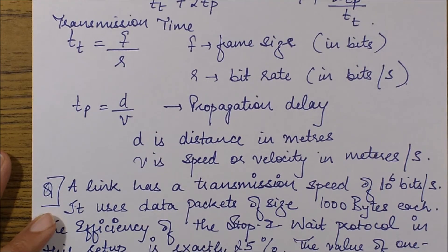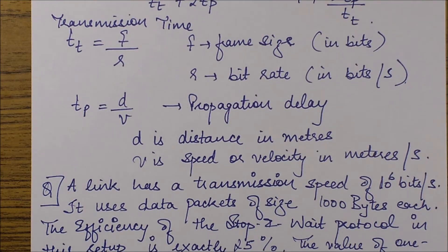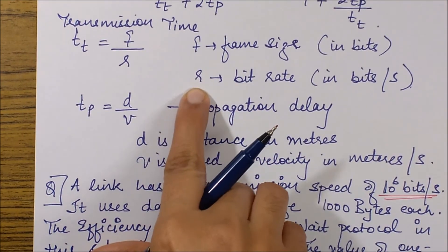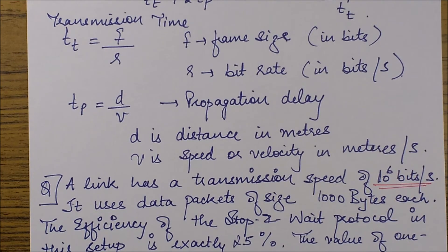The question is: A link has a transmission speed of 10 to power 6 bits per second. This is transmission speed, but please look - it is bits per second, meaning it is the bit rate. The question might give you confusing terms like this; you need to verify by looking at the units. It uses data packets of size 1000 bytes each, so we need to convert these bytes into bits.